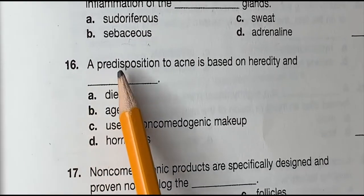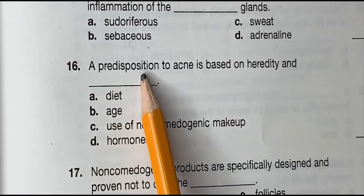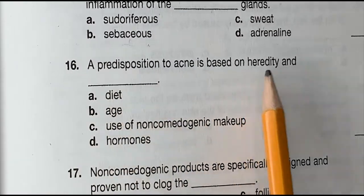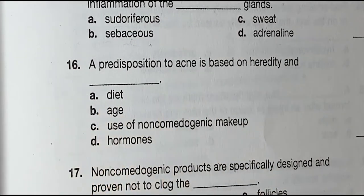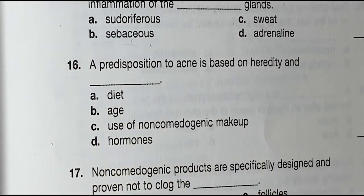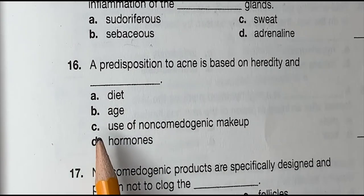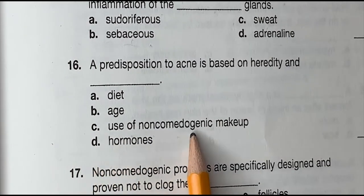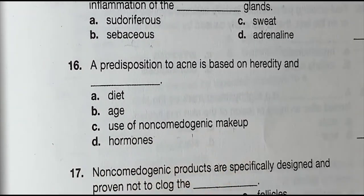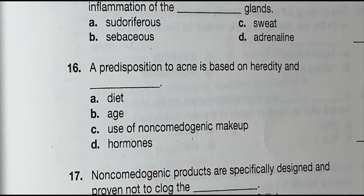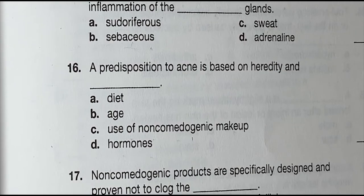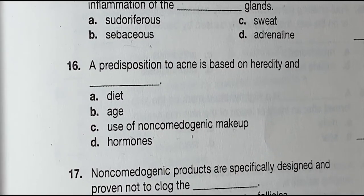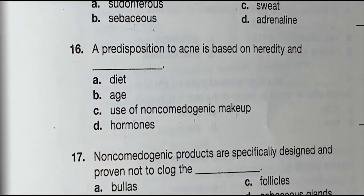Question 16: A predisposition to acne is based on hereditary and blank. Is it A, diet. B, age. C, use of non-comedogenic makeup. Or D, hormones. And the correct answer is D, hormones.